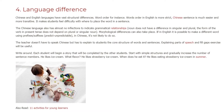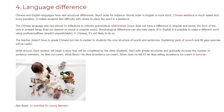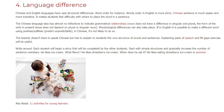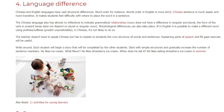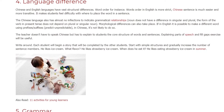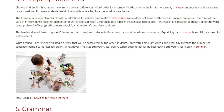For example, begin with: 'He likes ice cream.' Then prompt: 'What flavor?' — 'He likes strawberry ice cream.' Then: 'When does he eat it?' — 'He likes eating strawberry ice cream in summer.' This gradually builds sentence structure.